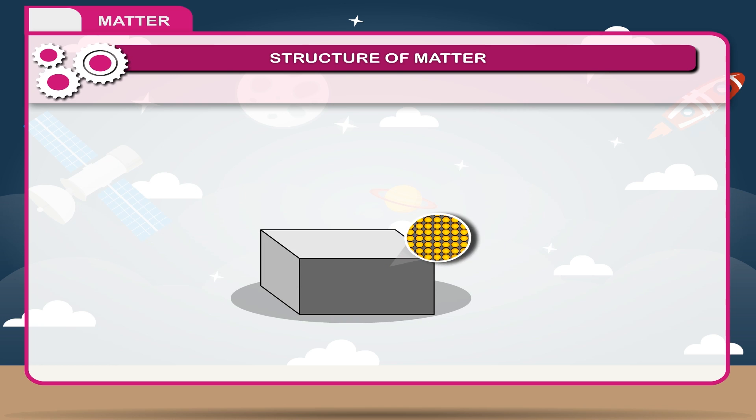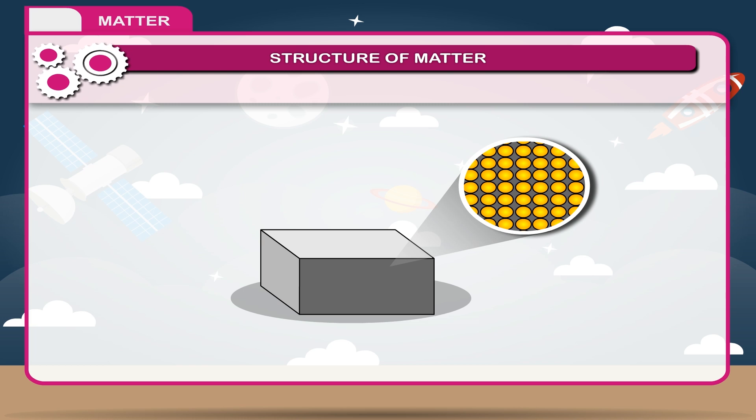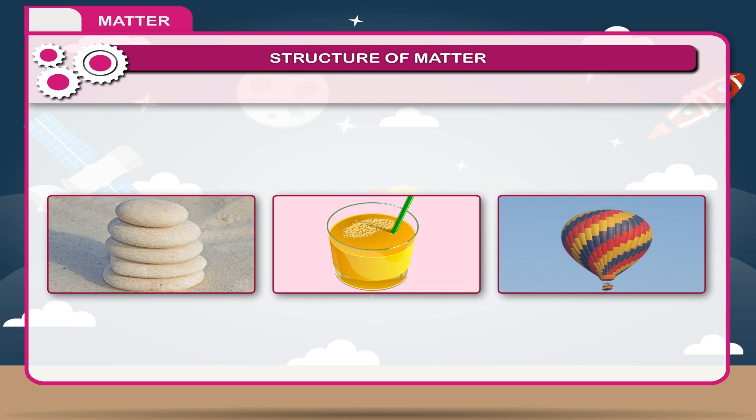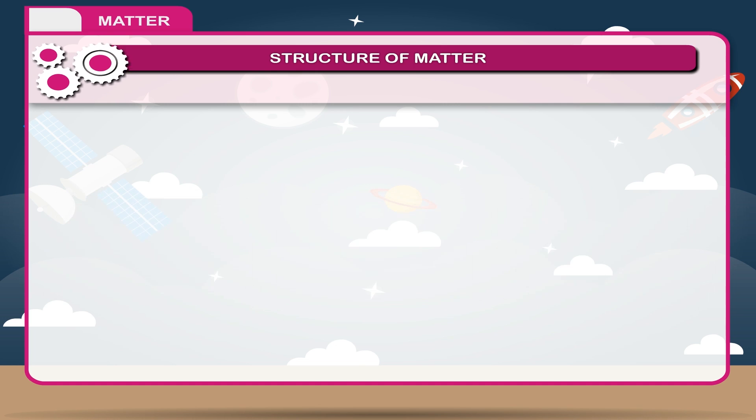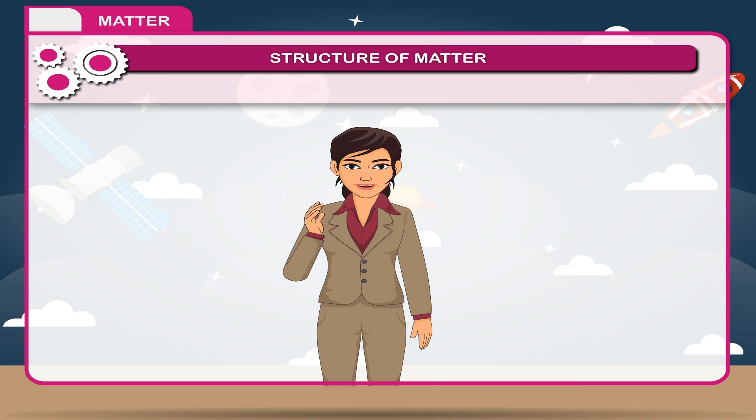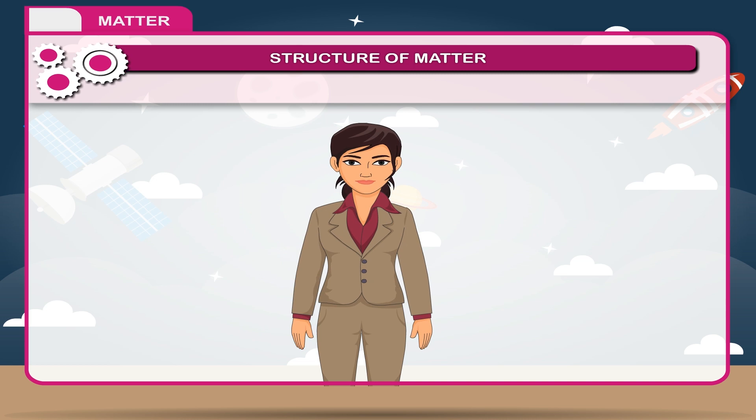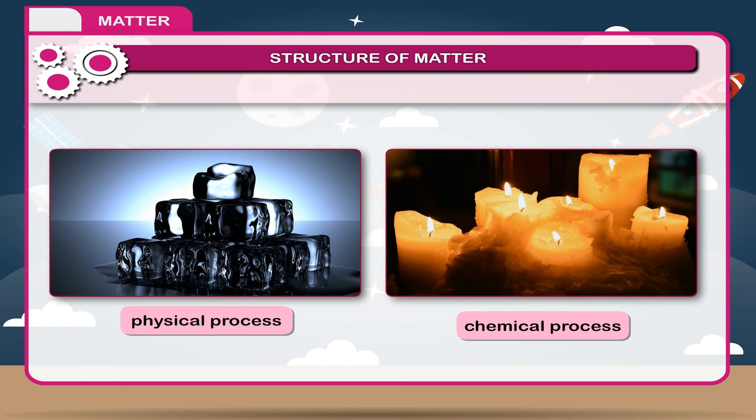Matter is made up of basic building blocks called elements. Elements are the basic building blocks of all matter. An element is defined as a substance which cannot be further subdivided into two or more simpler substances by any physical or chemical process.